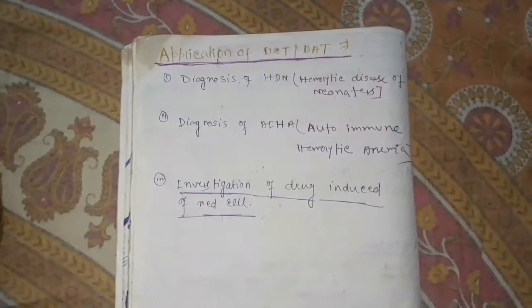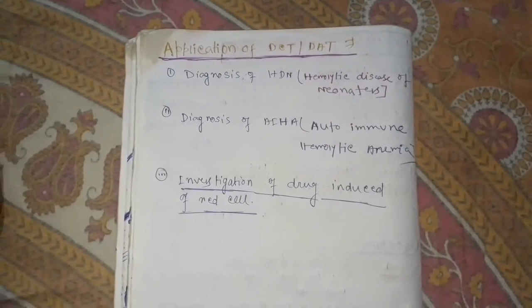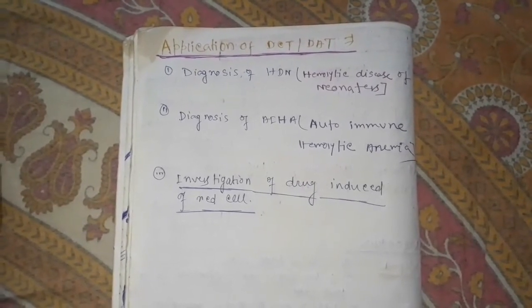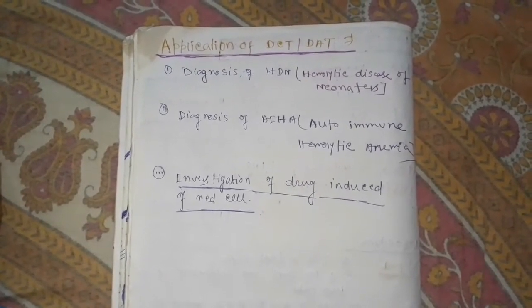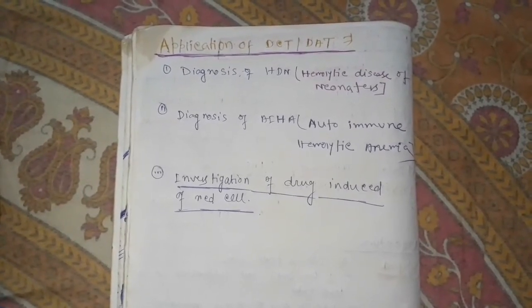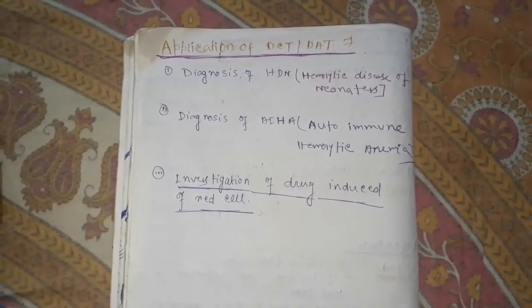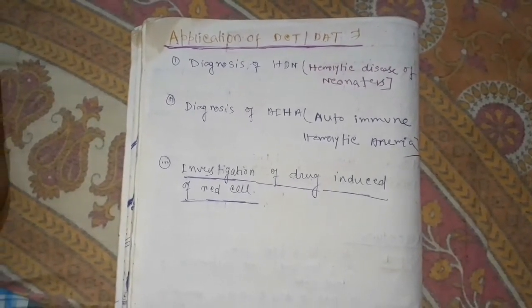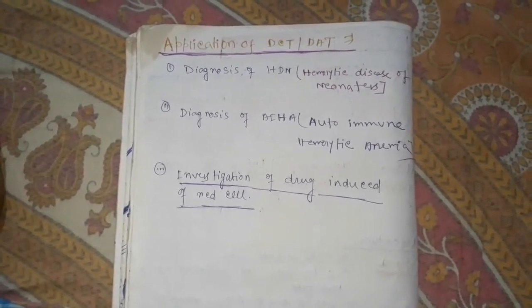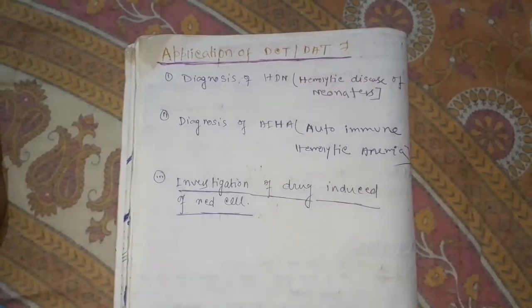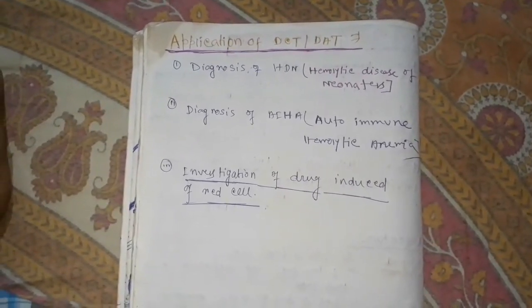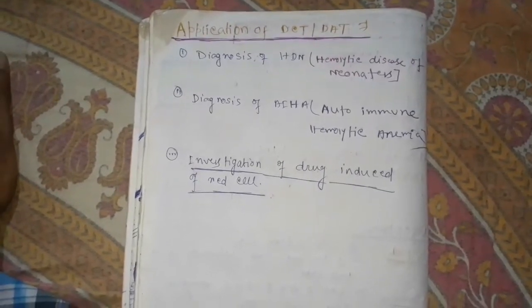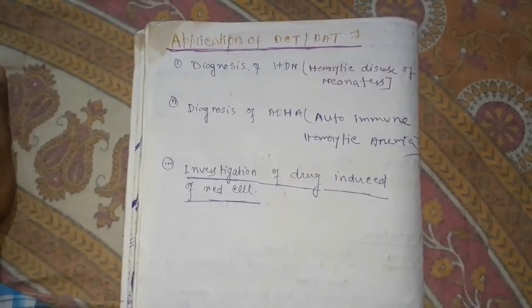The next applications of direct Coombs test or direct agglutination test: diagnosis of HDN, hemolytic disease of newborns. Next, diagnosis of autoimmune hemolytic anemia. Investigation of drug-induced damage of red cells.